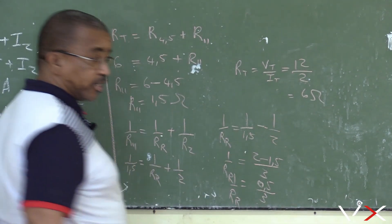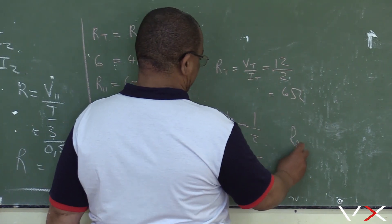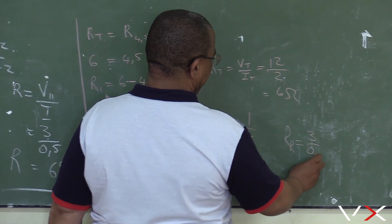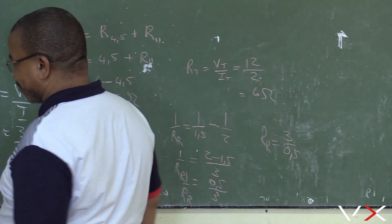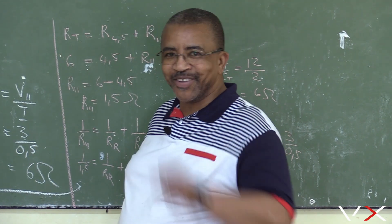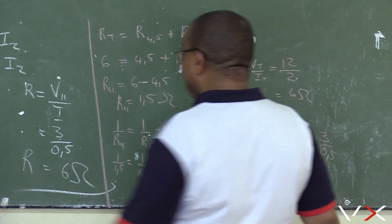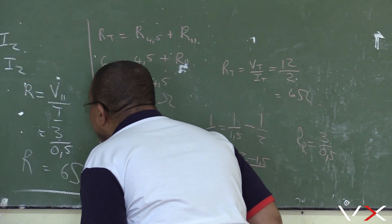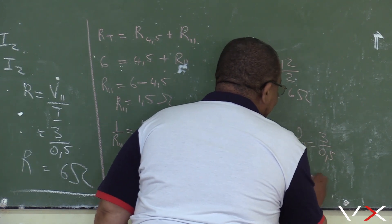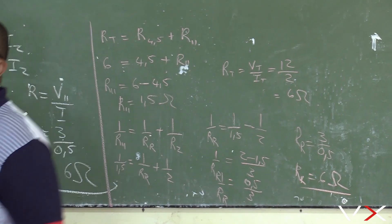Therefore RR equals 3 over 0.5. Any number divided by 0.5 is 2 times that number, which gives 6 ohms. So RR equals 6 ohms.